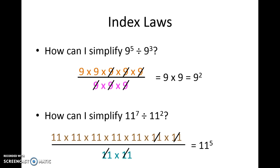Now at this point you might start seeing a pattern, so let's investigate that. If we have 9 to the power 5 and we have 9 to the power 3 and we subtract 5 from 3 we will get 2. Similarly, 11 to the power 7 and 11 to the power 2, if we subtract those we will get 11 to the power 5. So this gives us a bit of a hint about what our second index law might be.